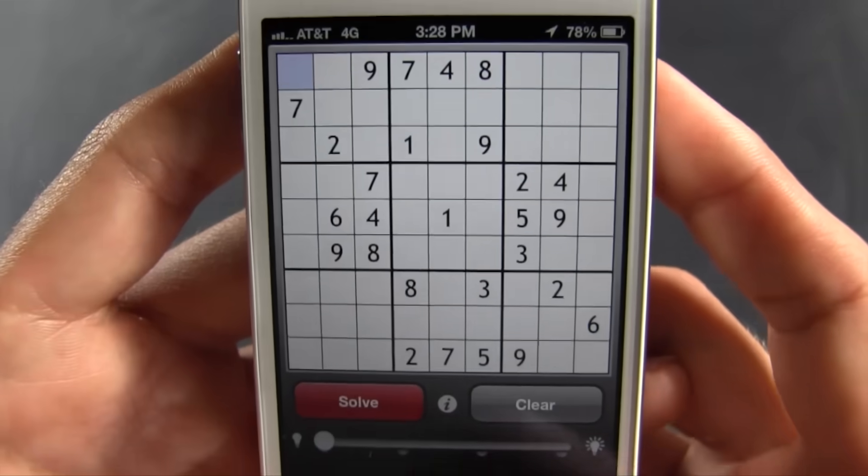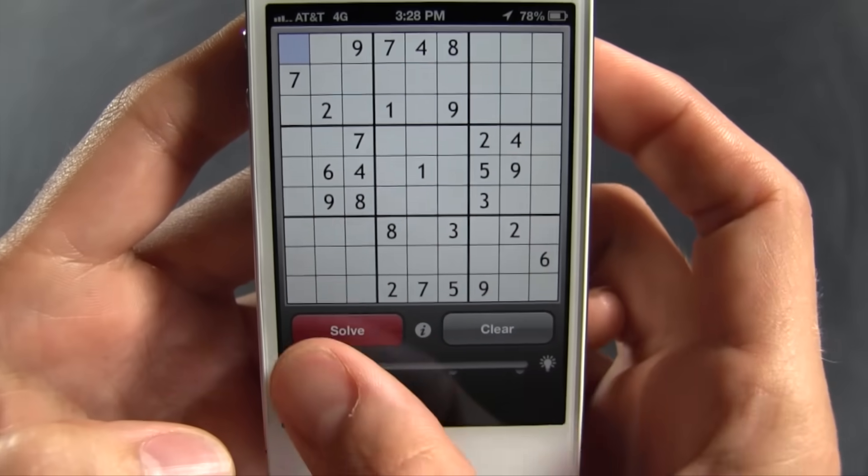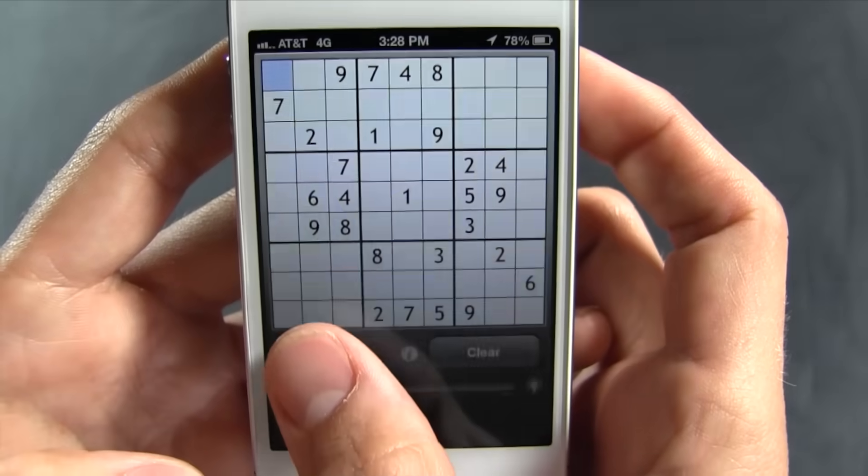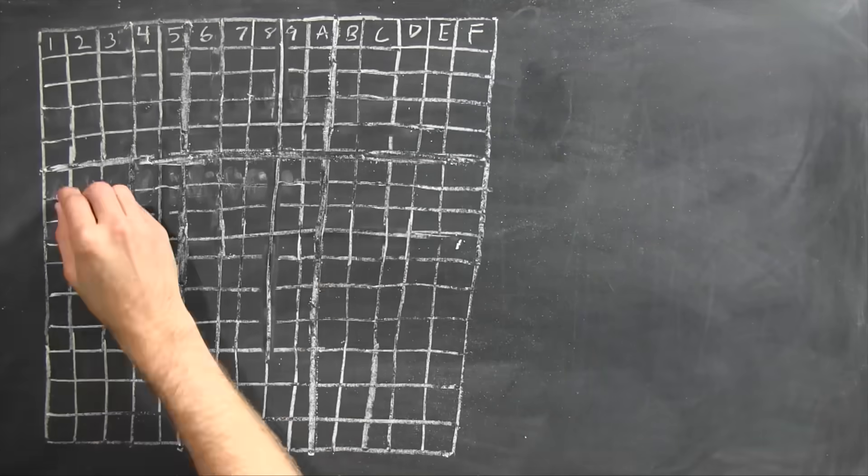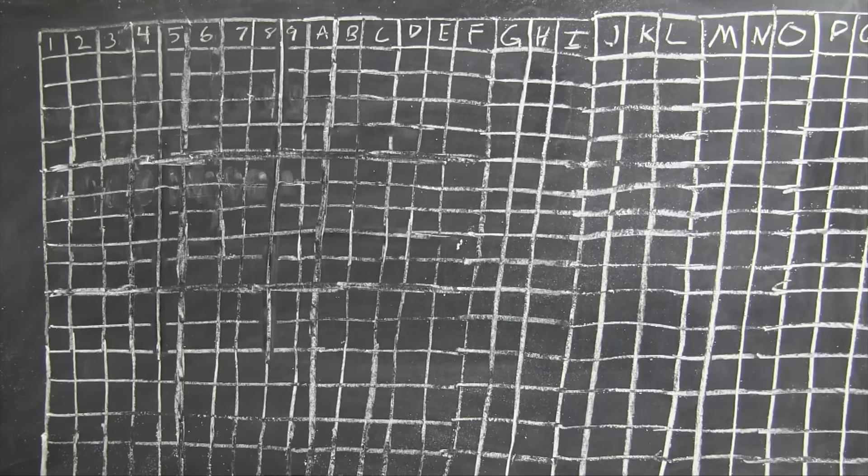And then there's Sudoku. Computers can usually solve a normal 9x9 grid in a few milliseconds, even though humans find them challenging. But as you make the grid bigger, the problem just gets really hard, rapidly getting out of reach for even the most powerful computers.